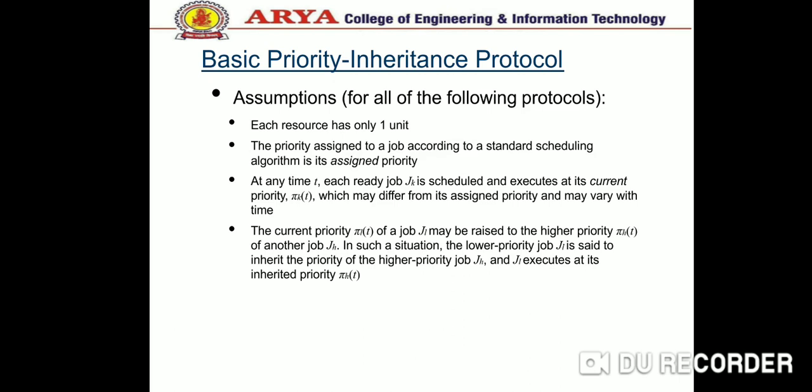If R is allocated to J', J' directly blocks J — the request for R is denied. Priority inheritance is transitive.